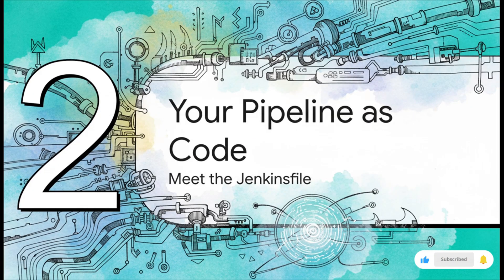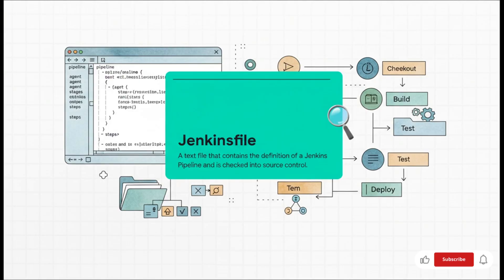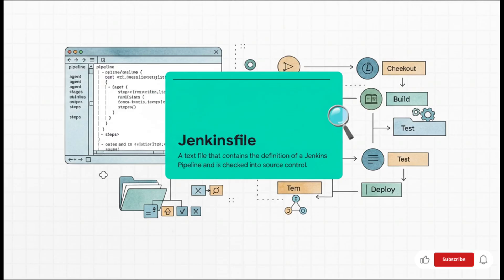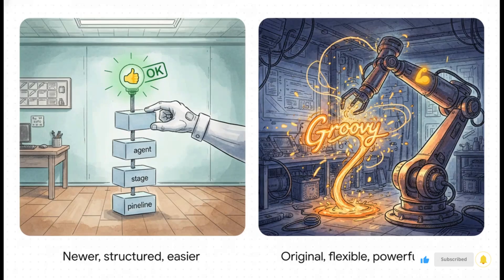What's the secret sauce here? It all comes down to one single powerful file — it's time to meet the star of the show: the Jenkinsfile. It's just a text file. Usually you name it 'Jenkinsfile' — capital J, no extension — and you check it right into the root of your source code repository. Think about what that means: your build process now lives with your code. When your code changes, your pipeline can change right along with it, all in the same commit, all in perfect sync.